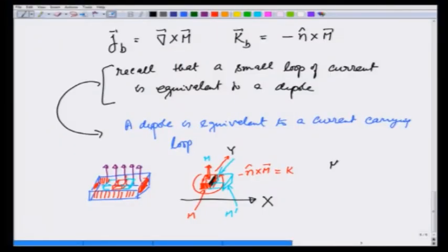Here, M_y is changing with x. Therefore this is related to curl of M, and that is what gives you the bulk current. So this is the physical interpretation of bound bulk current and bound surface current, similar to the interpretation we had for the bound charges and bound surface charges coming out of a polarization.